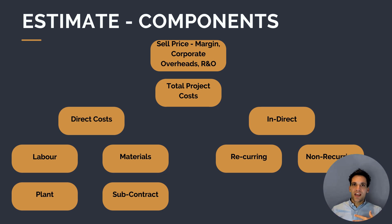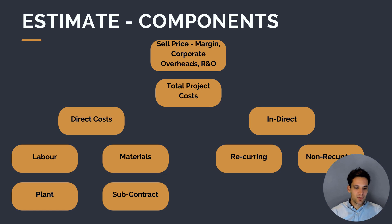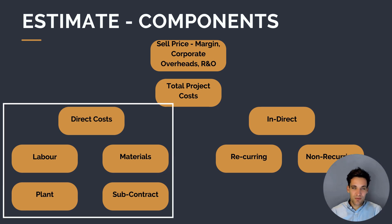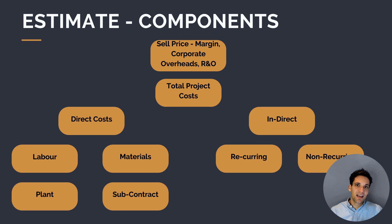Before we can start talking about the estimating process, we first need to understand the components of an estimate. We can break down project costs into two key categories: direct costs — the costs of completing physical construction works — and indirect costs — the costs of managing, supervising, and overseeing the work. Each direct cost item will consist of labor, plant, materials, and subcontract costs.